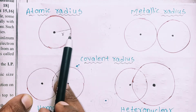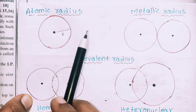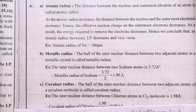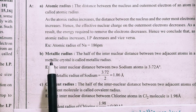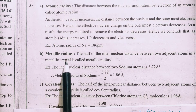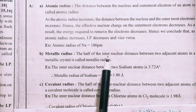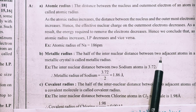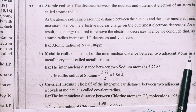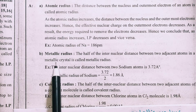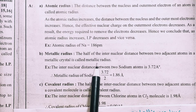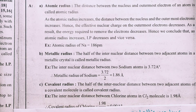The atom has a radius. But in the case of metals — metallic radius — the half of the internuclear distance between two adjacent atoms in a metallic crystal is called metallic radius.